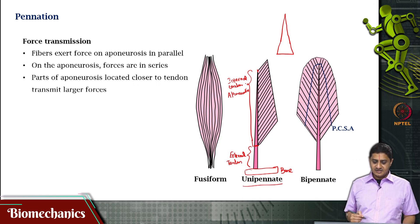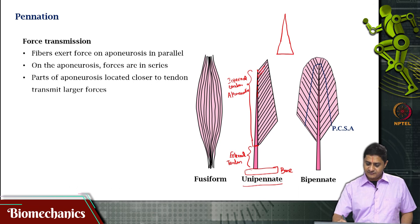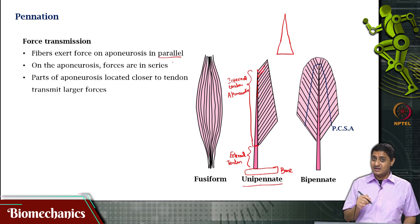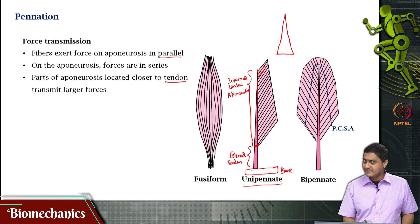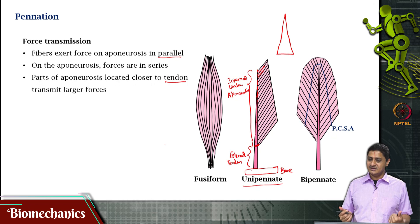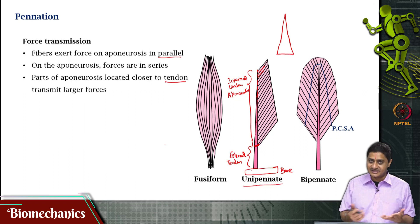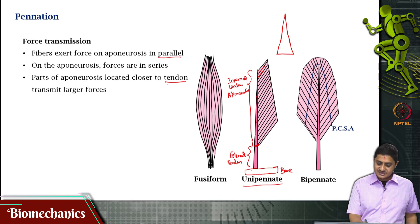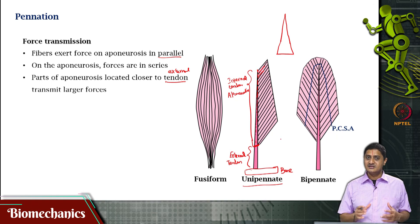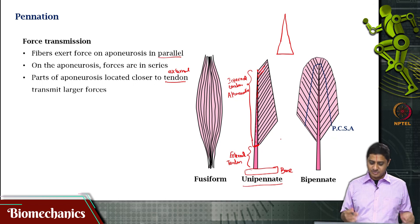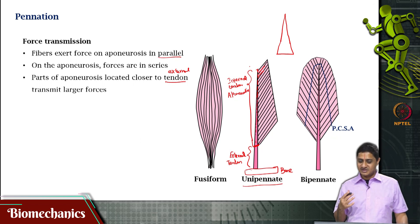On the aponeurosis, forces are in series — they get added in series. Each fiber is producing force in parallel, so the fiber force on the aponeurosis is parallel, but the force on the aponeurosis keeps getting added in series. Parts of the aponeurosis located closer to the external tendon can withstand and transmit a larger amount of force compared to those parts that are farther away, because of this efficient arrangement.